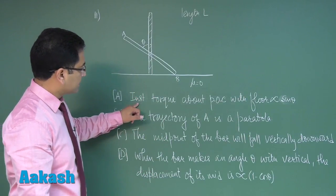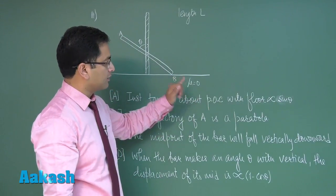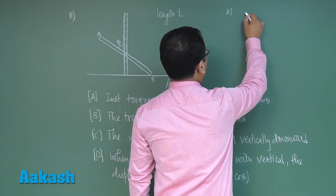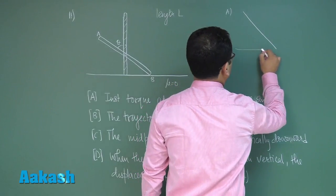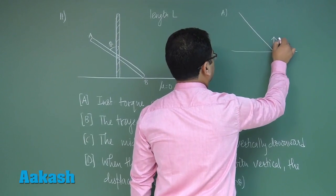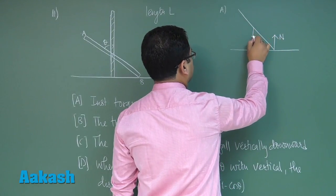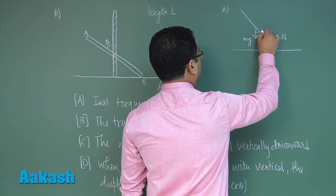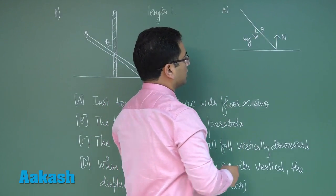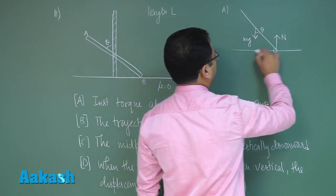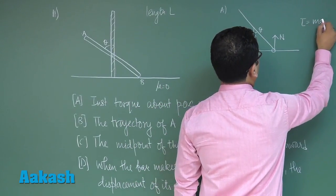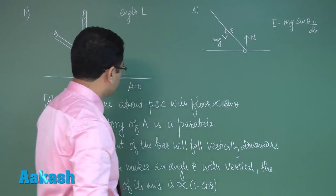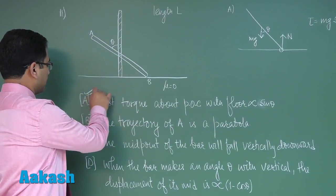Option A states: the instantaneous torque about the point of contact with the floor is directly proportional to sine theta. Let's verify. Making the free body diagram, the only force is mg. Angle theta is measured with respect to the vertical, so torque about the contact point is mg times sine theta times L by 2. Therefore option A is correct.